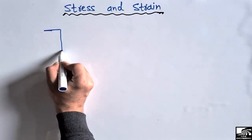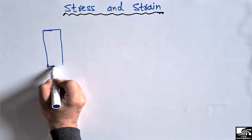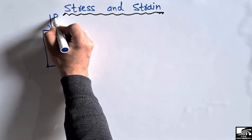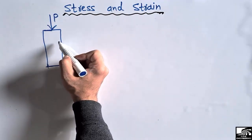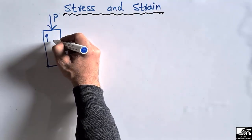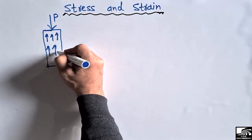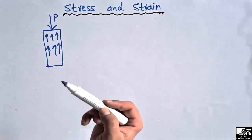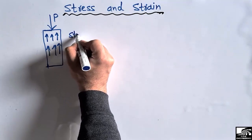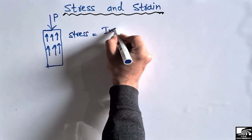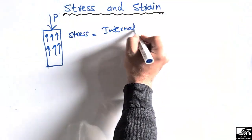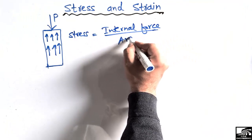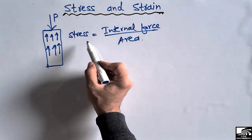Let's consider this is any column, and this column is being acted upon with a point load of P. Due to this load acting on the column, it will create some internal forces inside this column. This internal resistance to the applied load is known as stress. Stress is basically the internal force created inside a body divided by the cross-sectional area of the column.